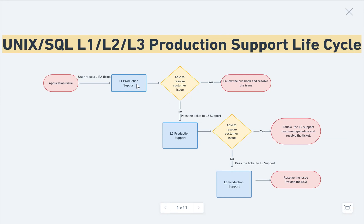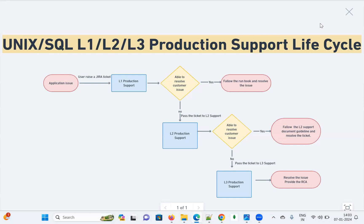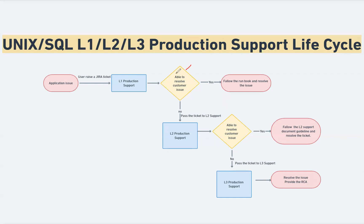The ticket arrives at L1 production support. Now what does L1 have to do? They check whether they can resolve it or not — that is the decision-making step. If yes, they work on it. If no, they pass the ticket to the next level.